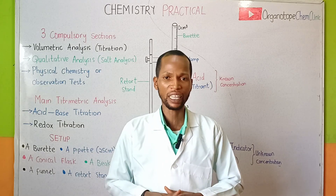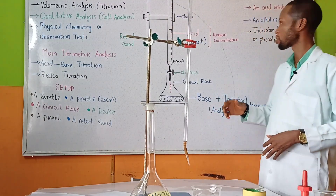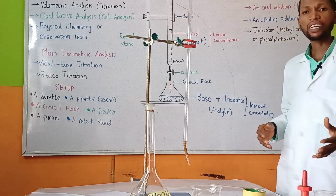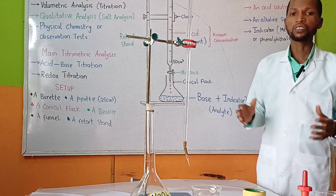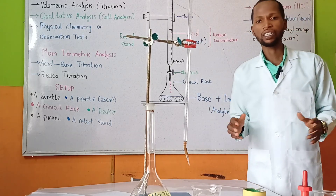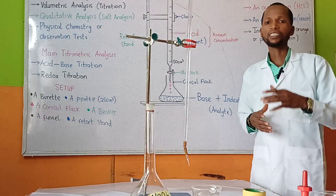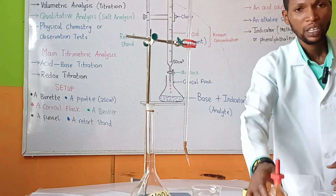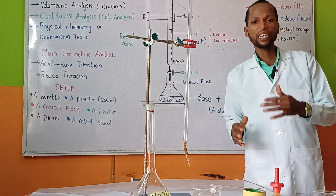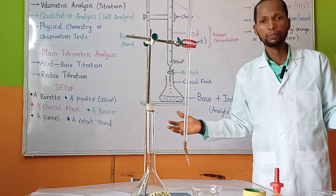In most WAEC or GCE chemistry practicals, the acid solution mostly used is hydrochloric acid (HCl) and the alkaline solution mostly used is sodium hydroxide (NaOH). HCl is a strong acid and NaOH is a strong base, so in a strong acid/strong base titration any indicator is suitable, such as methyl orange or phenolphthalein. In this titration we will use methyl orange. When methyl orange is added to sodium hydroxide it changes from orange to yellow, and when acid is introduced further it changes to a light pink.